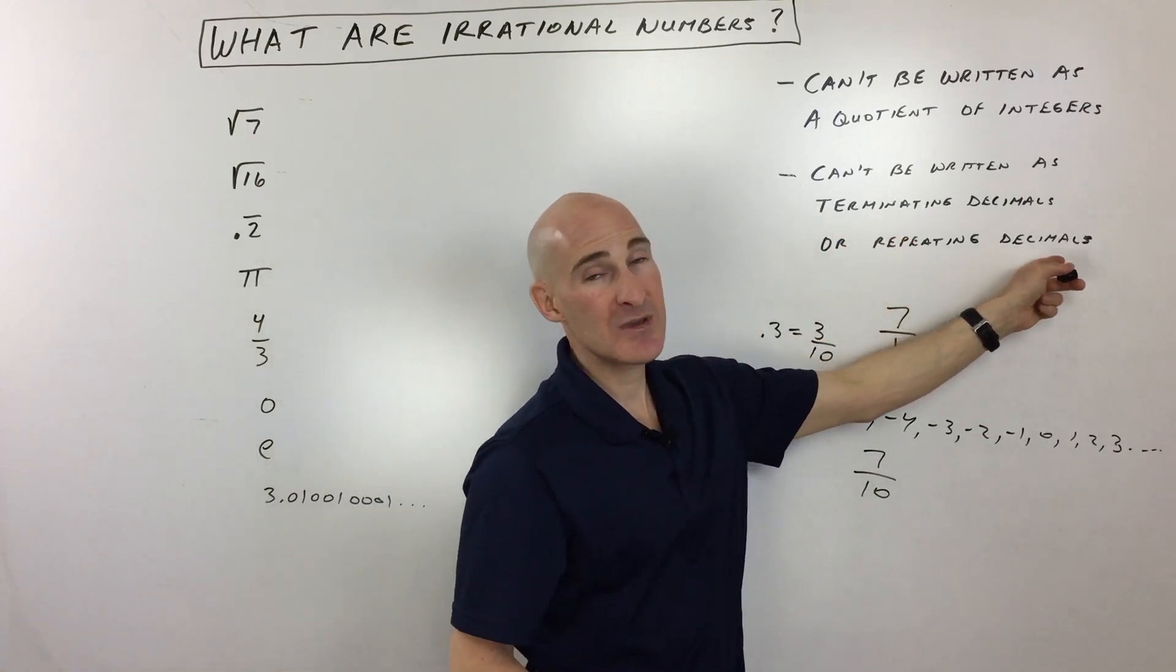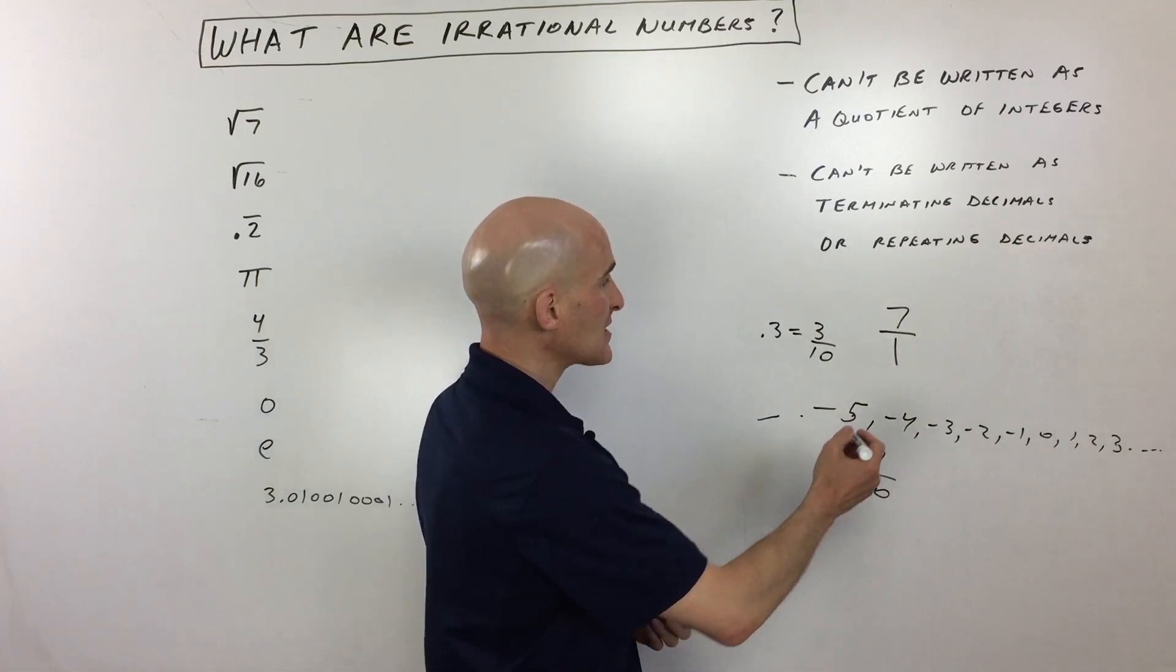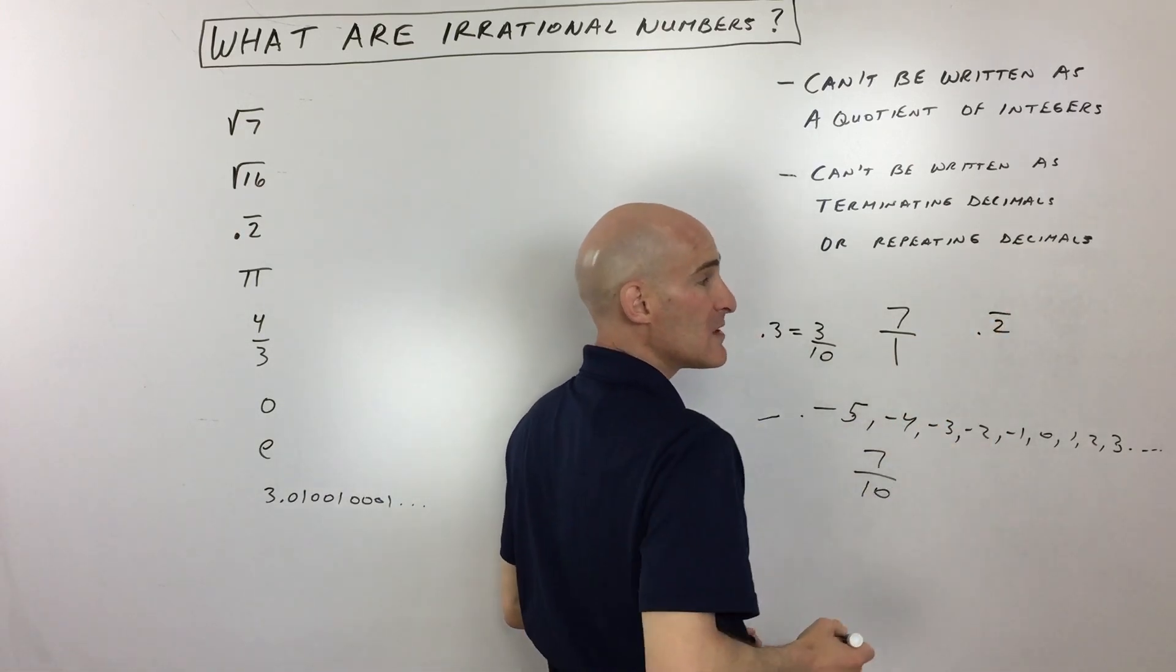And then also, it cannot be a repeating decimal. Now, a repeating decimal would be something like this, 0.2 repeating.